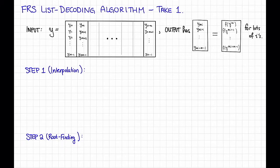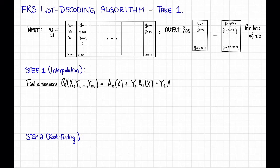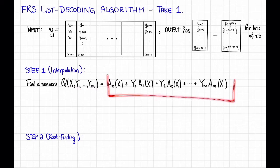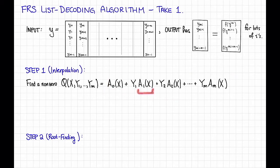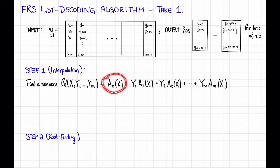More precisely, in the first step, we are going to find an M+1 variate polynomial Q of a very particular form. Q is going to have variables X and then Y_1 up through Y_M, and it's going to have this form: some polynomial in X, A_0 of X, plus Y_1 times A_1 of X, plus Y_2 times A_2 of X, and so on, all the way up to Y_M times A_M of X. We're going to do this interpolation so that A_0 has degree D plus K minus 1, and all of the A_i's have degree at most capital D.